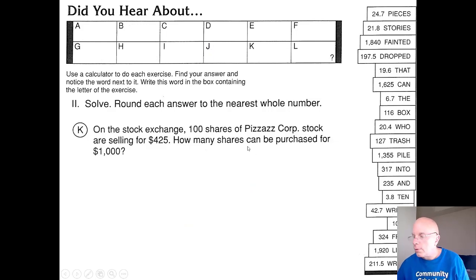On the stock exchange - if you got 235 after you try this one on your own, you can move ahead. On the stock exchange, 100 shares of Pizzazz Corp stock are selling for $425. How many shares can be purchased for $1,000? A little over 200, I would think. Let's do 100 shares per $425.